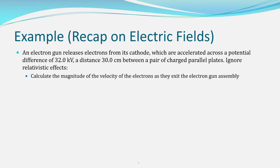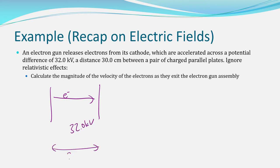First, I want to see if you remember how to calculate the final velocity of an electron as it accelerates between the two plates of the electron gun. In this question, electrons are accelerated across a potential difference of 32.0 kilovolts, and the distance between the plates is 30 centimetres. Can you calculate the final velocity of the electrons as they exit the gun — the gain in velocity from one plate to the other?